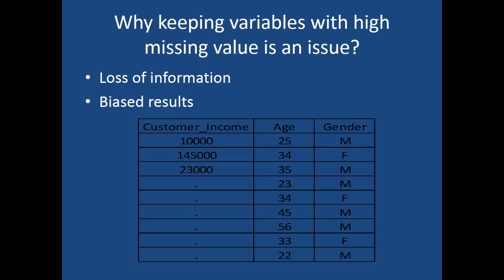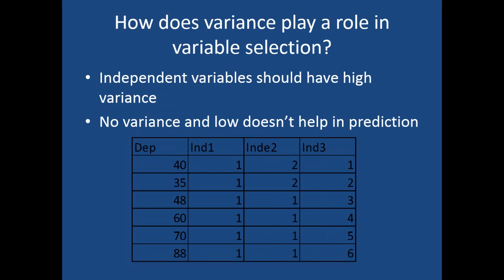One solution is to remove this particular variable. If it is important, you can use missing value treatment later on, but if it's not an important variable it's good to drop it. So that's one variable selection criterion: with high missing values, you can think of dropping the variable.